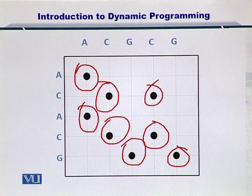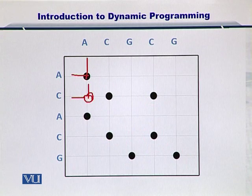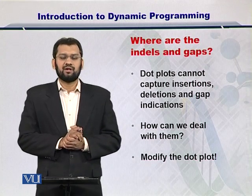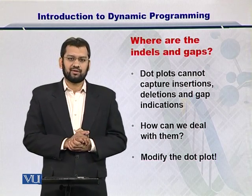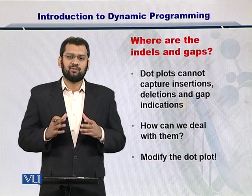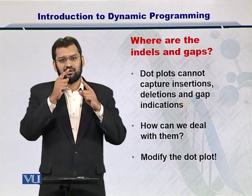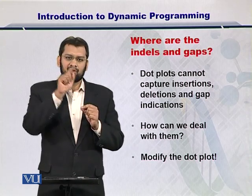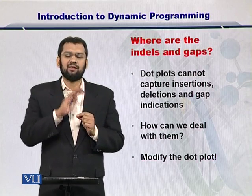It is important to note that these dots are positioned on the corners of the grid points. In their current form, the dot plots cannot capture insertions, deletions, and mutations, because you only indicate the matches in the matrix. Those nucleotides or amino acids which are not matching are not labeled in any way.